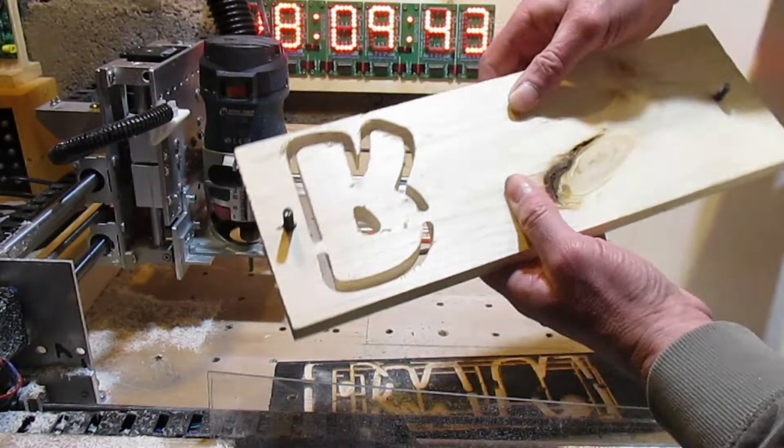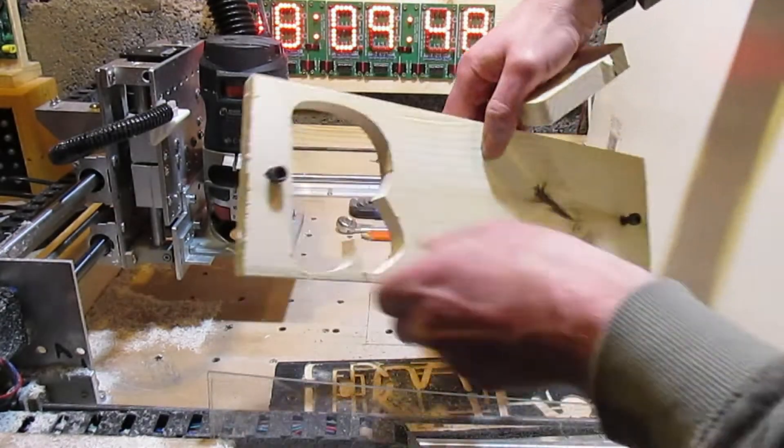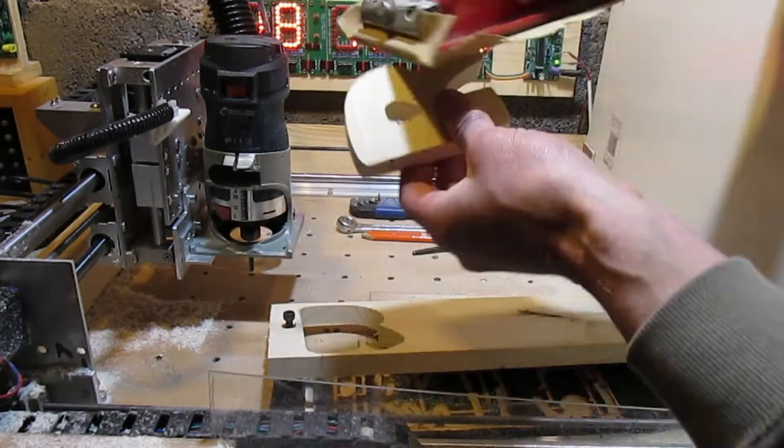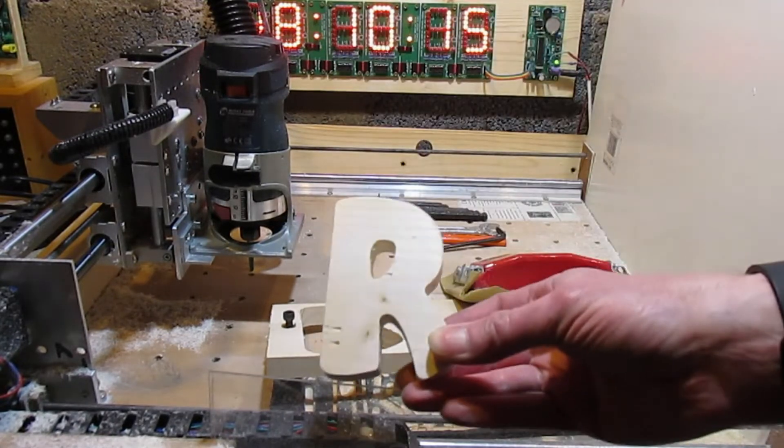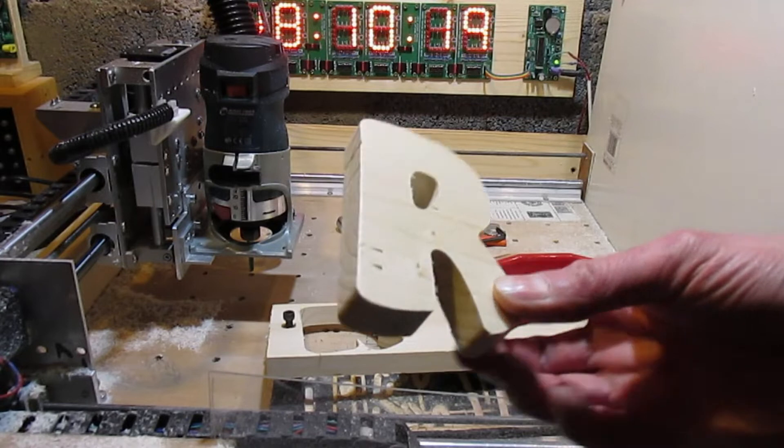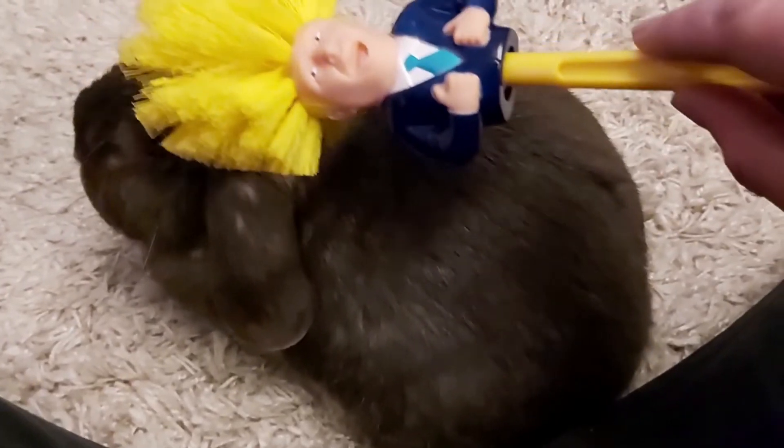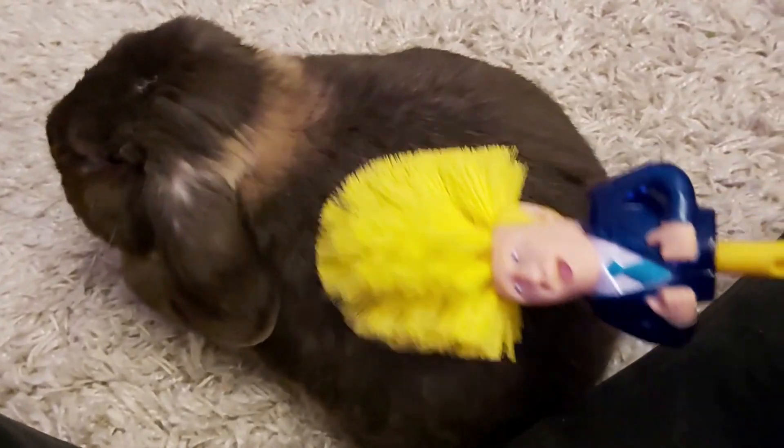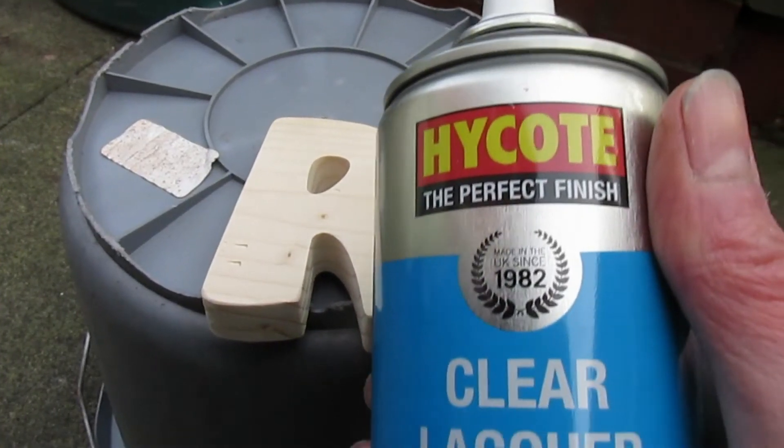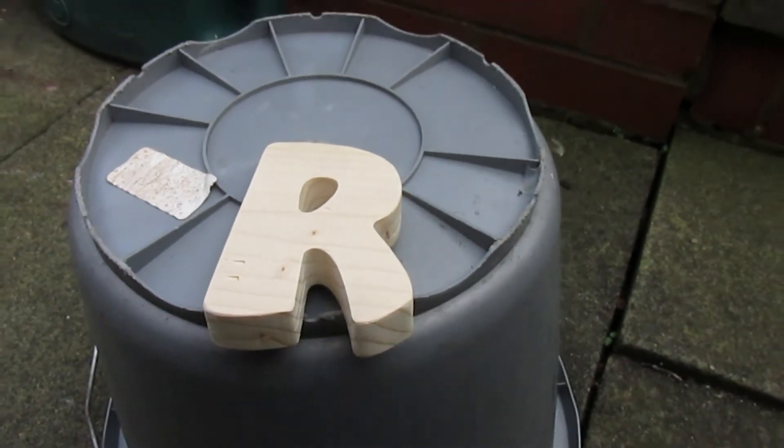The letter R is still attached by the tabs and can be easily popped out with a quick sand down to neaten it up. I finished it off with a couple of coats of clear spray lacquer.